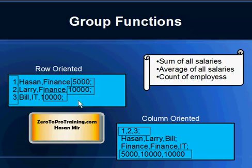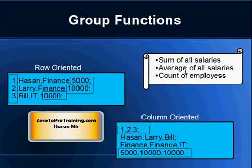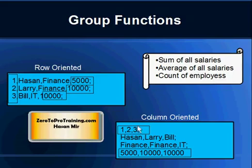In the column-oriented method, to answer the same sum query you simply read the last row — just one read, because all the salaries are stored in one line: 5000, 10000, 10000. So one read versus three reads. For average salary, in row-oriented you still do three reads to get the sum and count. In column-oriented, one read gives you both. Similarly, for a count of employees, one read of the ID column in column-oriented gives you the count.